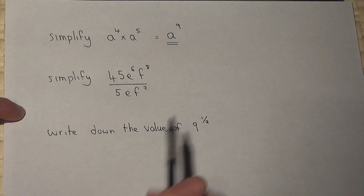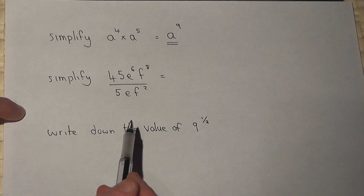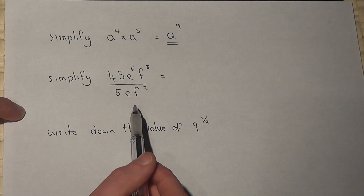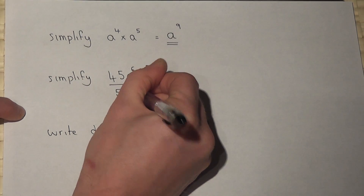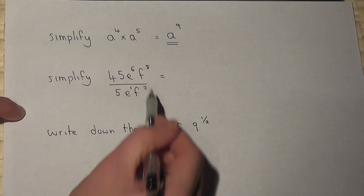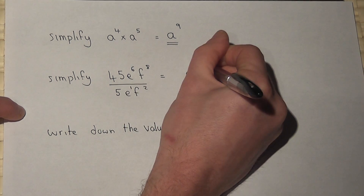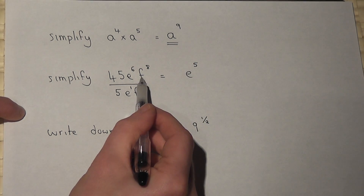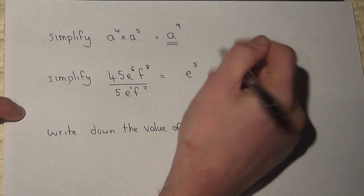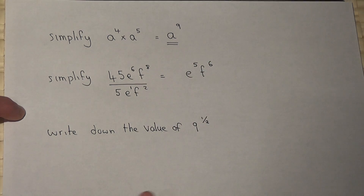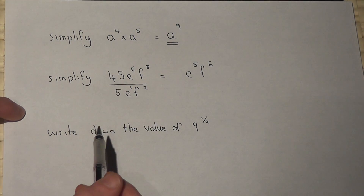In the second example, we're dividing — the fraction means divide. We deal with the e and f terms separately. e to the power of 6 divided by e to the power of 1: we subtract, so 6 take 1 is 5, giving e to the power of 5. f to the power of 8 divided by f squared: 8 take 2 is 6, giving f to the power of 6. For the numbers, 45 divided by 5 is 9.